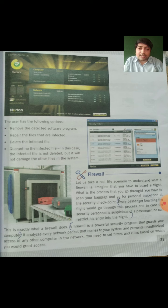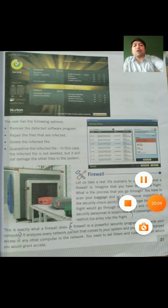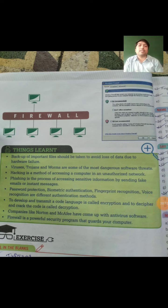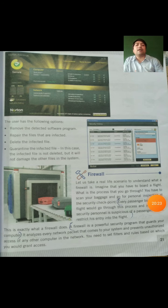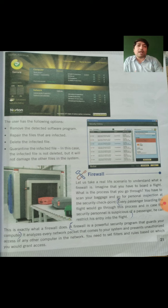The firewall analyzes every network packet that comes to your system and prevents unauthorized access. If any other computer on the network tries to access your system, the firewall restricts it. That concludes this chapter. Please read the topics carefully, complete all exercises, and if you have any comments, send them to me. Thank you, students.